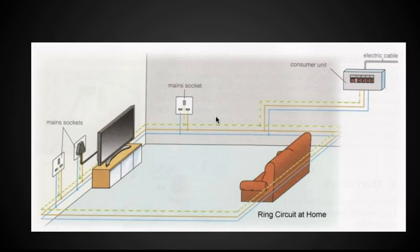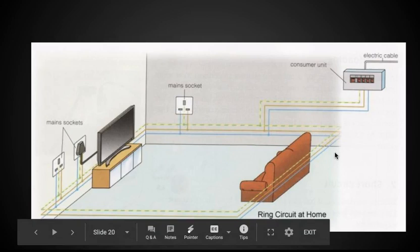Your home is wired in a parallel circuit. So in case one of the sockets is disconnected, let's say a wire is damaged, the other sockets will be unaffected.